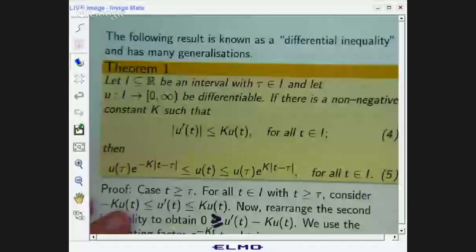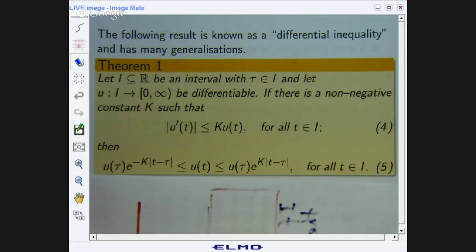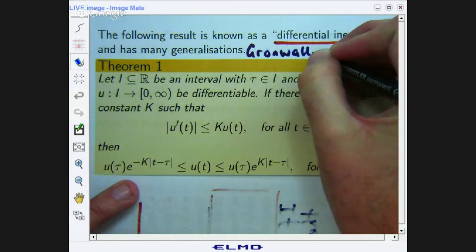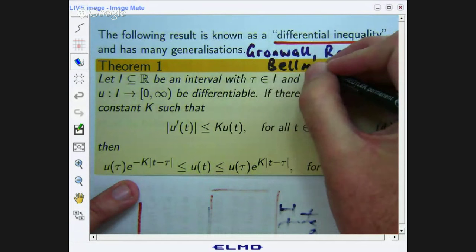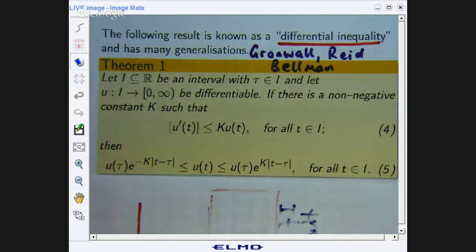Okay, so that's pretty basic. Let's ramp it up a bit. Alright, here's the result that I'm going to discuss. The result involves a differential inequality and it's usually associated with the names Gronwall, Reid and Bellman. These three mathematicians are well associated with differential and integral inequalities. Let's have a look at the theorem as it stands and then we'll talk about the proof.